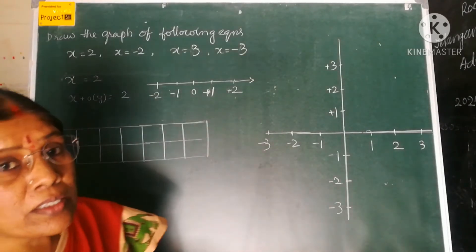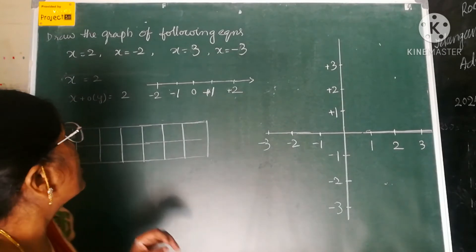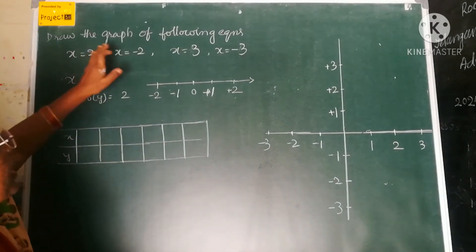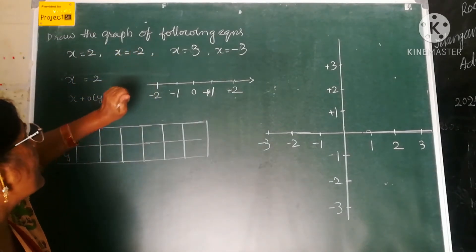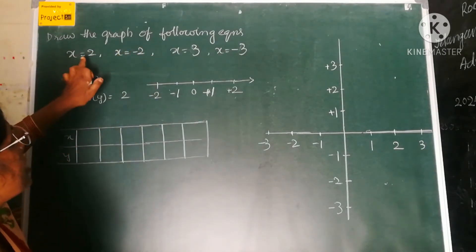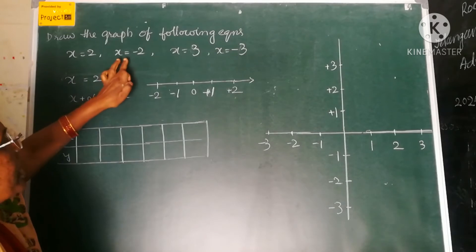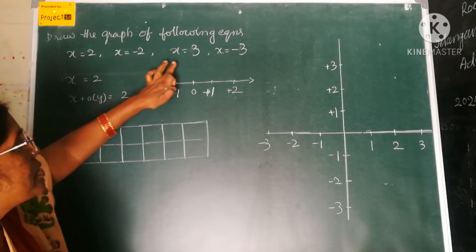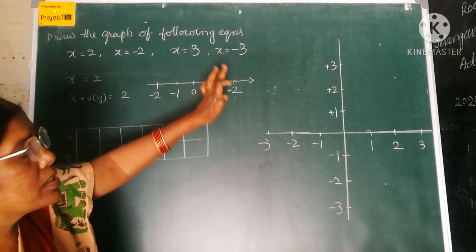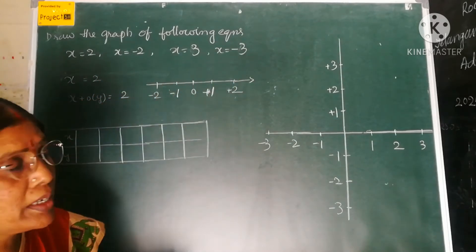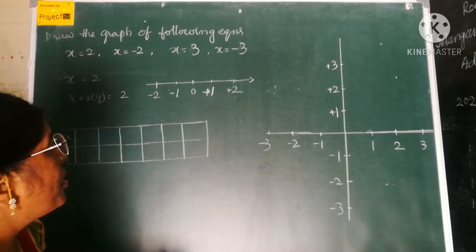Children, see these questions. Draw the graph of the following equations: x is equal to 2, x is equal to minus 2, x is equal to 3, x is equal to minus 3.